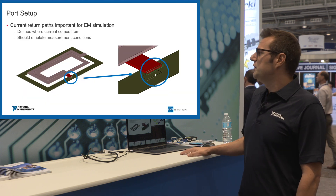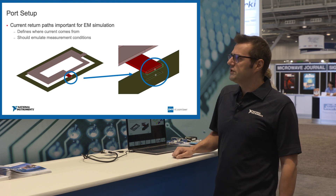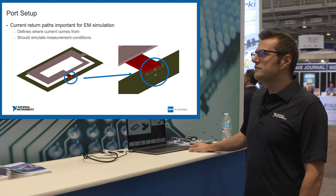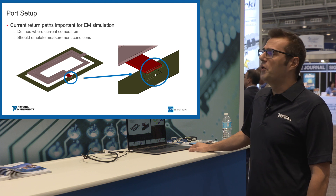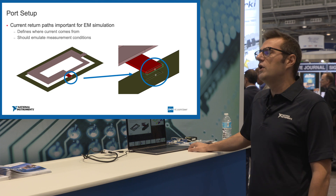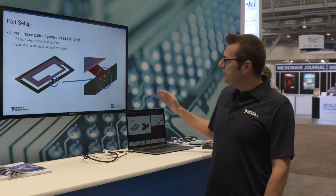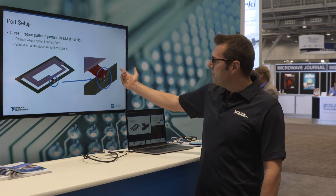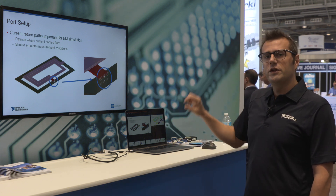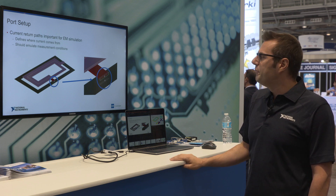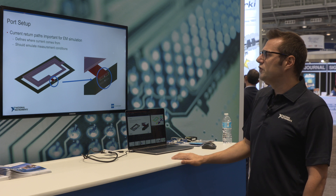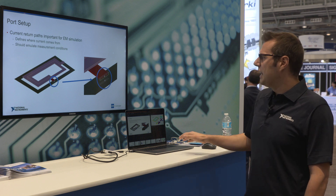Here you can see a typical structure: a spiral inductor. A question we often get is how to place ports, and the answer is you should always place your ports in a way that emulates your measurements. In this case you have a plus/minus port — Axiom will impose a voltage between the plus terminal and the minus terminal, which is very similar to what you actually measure in the lab.